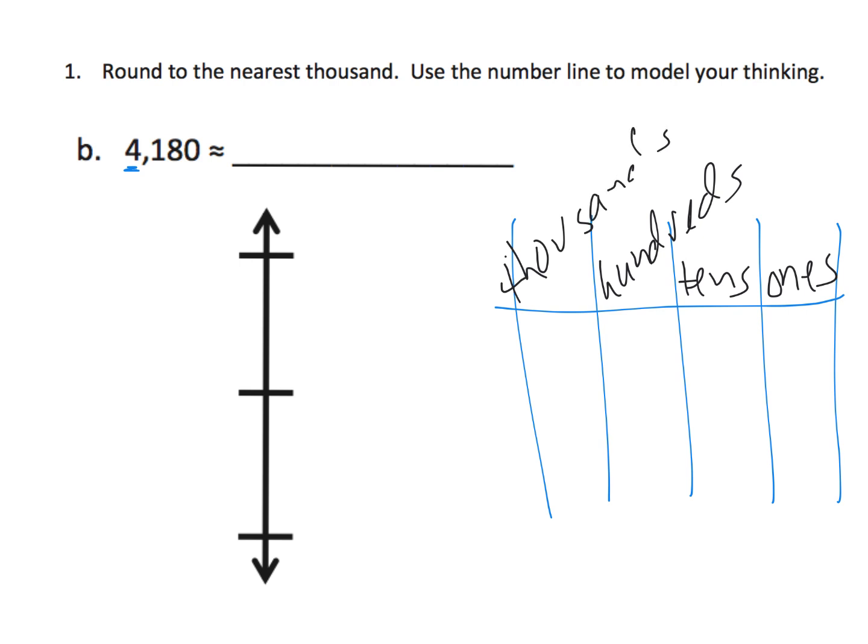In this case, we would be putting four, one, eight, zero here. So they're going to see that the four is in the thousands place. So what this means is we've got 4,000, 5,000, 6,000.